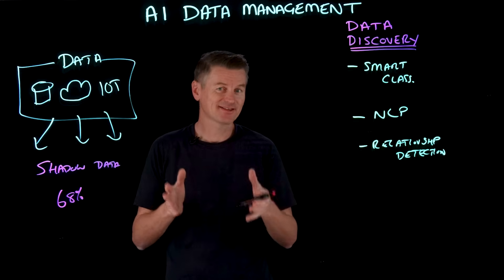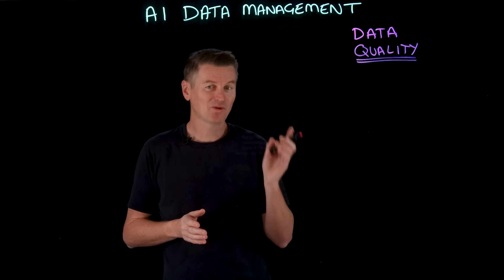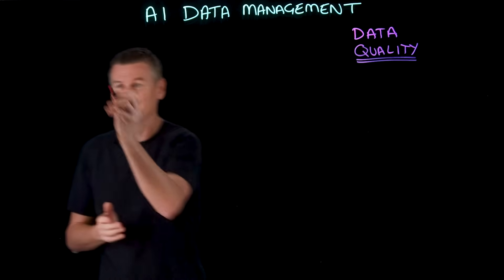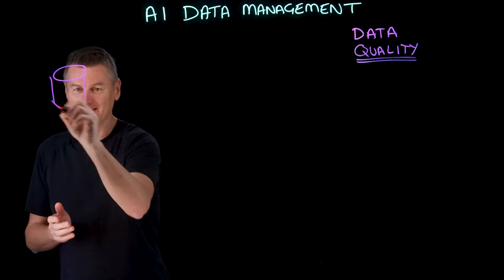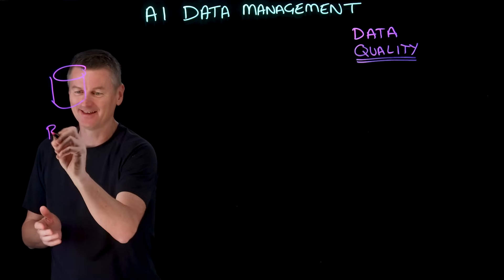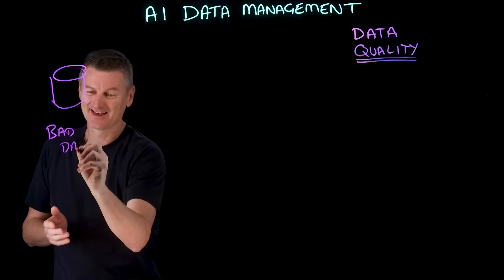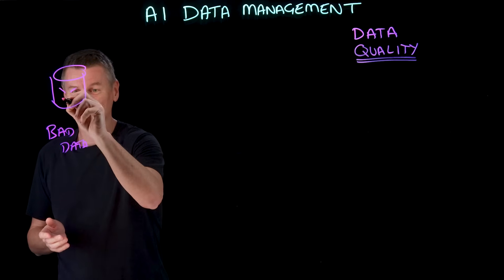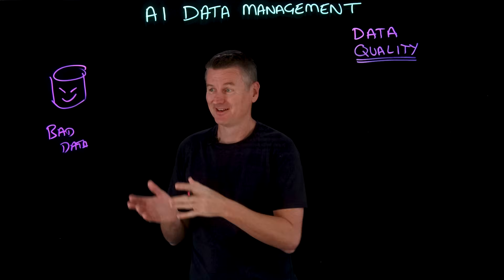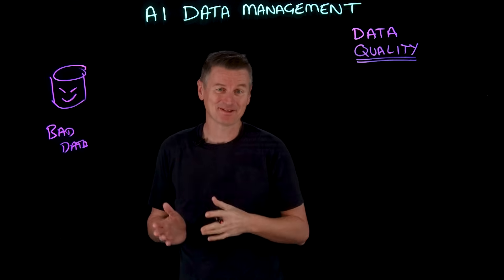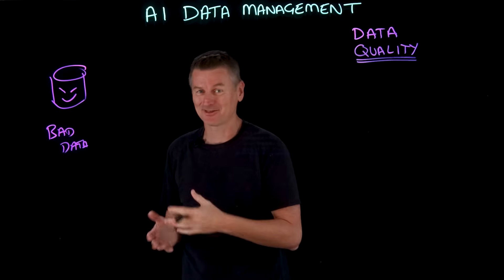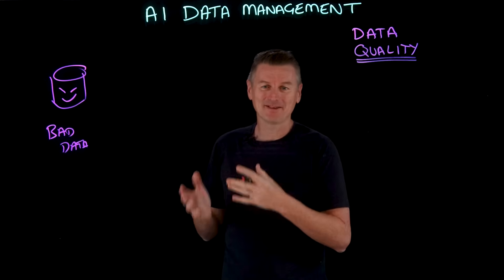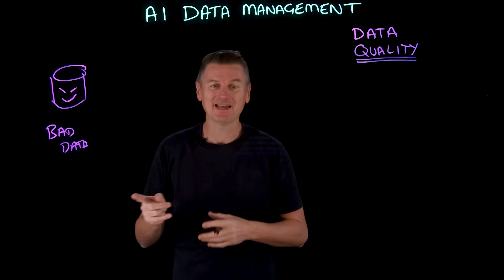So that's data discovery, but what about data quality? It's all very well getting access to data, but what if this data is actually bad data? Bad data can cause more problems than no data at all, because if data is inaccurate, inconsistent, incomplete, or just outdated, the AI models or business decisions based on it will be unreliable.